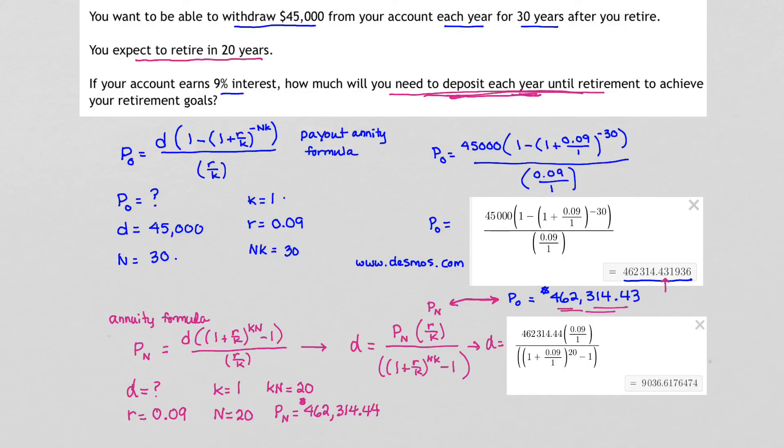Plugging all our values in the proper places, namely P sub N, replacing that with $462,314.44, replacing R with 0.09, K with 1, and N with 20, we get the following: that D is approximately equal to 9036.617, or our annual deposits are going to be $9,036.62.